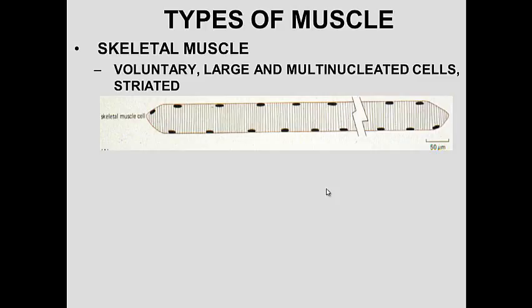Skeletal muscle is a large cell with nuclei on the periphery, not in the center. It is voluntary — the one we can consciously control. It is large, multinucleated, and has striations.